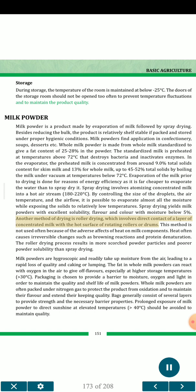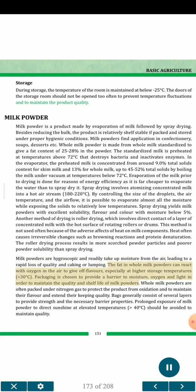Another method of drying is roller drying, which involves direct contact of a layer of concentrated milk with the hot surface of rotating rollers or drums. This method is not used often because of the adverse effects of heat on milk components — heat often causes irreversible changes such as browning reactions and protein denaturation. The roller drying process results in more scorched powder particles and poor powder solubility than spray drying. Milk powders are hygroscopic and readily take up moisture from the air, leading to rapid loss of quality and caking or lumping. Packaging is chosen to provide a barrier to moisture, oxygen and light in order to maintain the quality and shelf life of milk powders. Whole milk powders are often packed under nitrogen gas to protect the product from oxidation and to maintain their flavor and extend their keeping quality. Prolonged exposure of milk powder to direct sunshine at elevated temperatures greater than 40 degrees Celsius should be avoided to maintain quality.